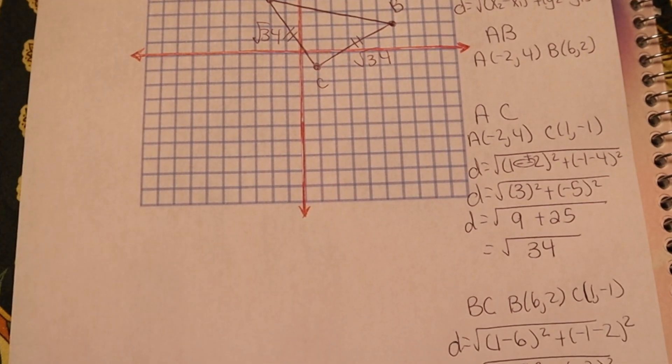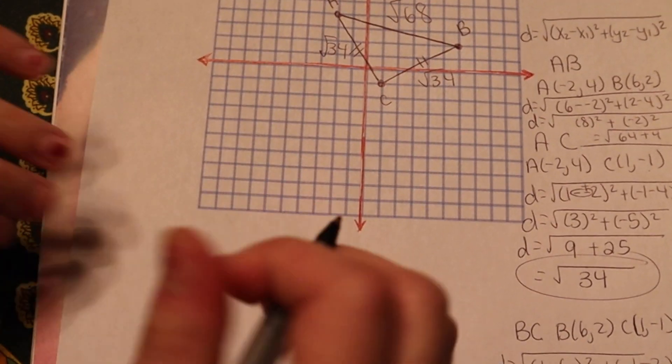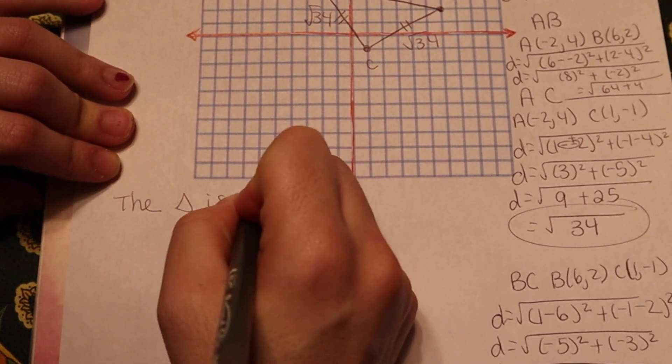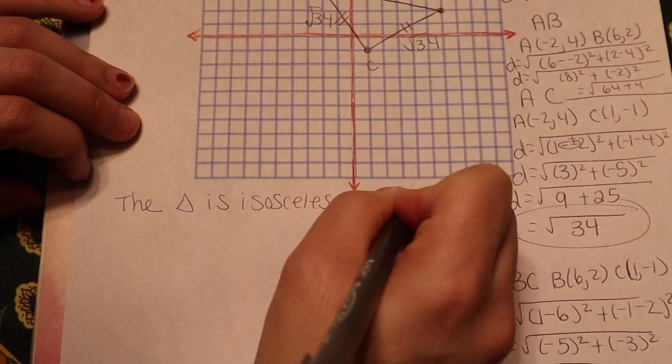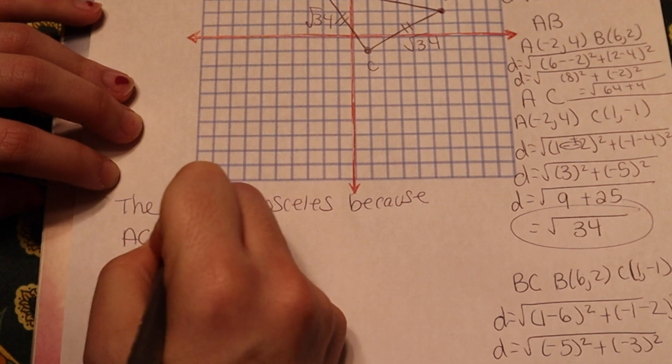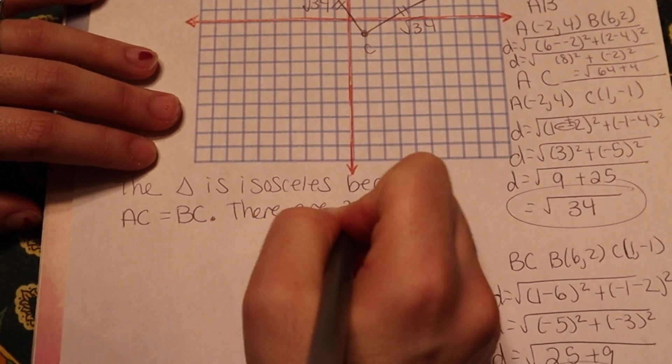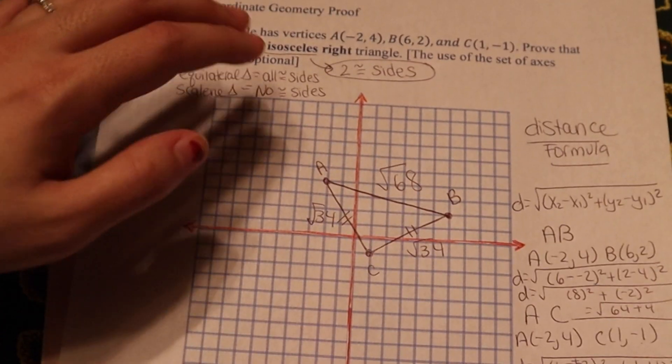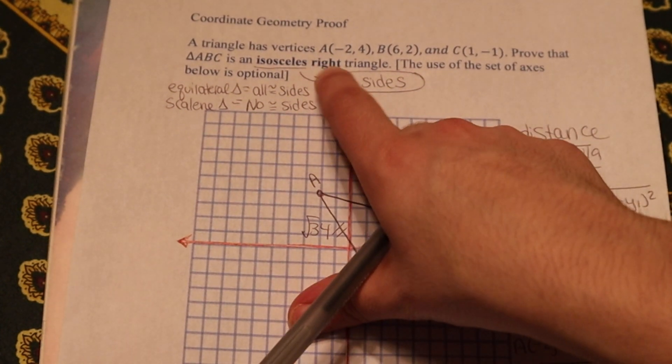So right now I've proved that this is isosceles because I have two equal sides. So what I would say right now is the triangle is isosceles because AC is equal to BC. There are two congruent sides. So right now I've taken care of proving this triangle to be isosceles. But I would only earn half credit if this was a regent's exam, because I haven't done anything with proving that it's a right triangle yet.